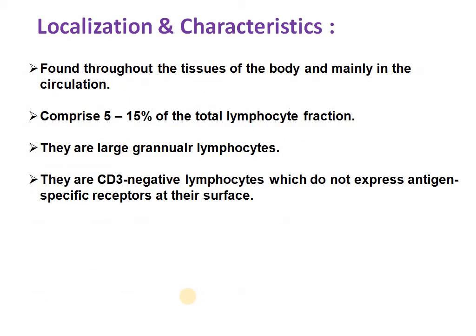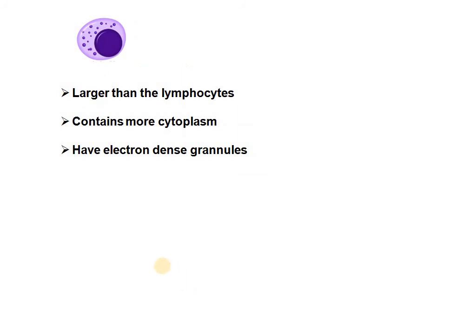NK cells can be found throughout the tissues of the body, mainly in the circulation, comprising about 5 to 15 percent of the total lymphocyte fraction. They are large granular lymphocytes. They can be differentiated from regular lymphocytes because they are larger in size, they contain more cytoplasm, and they have electron-dense granules within the cytoplasm. These are the characteristic features by which NK cells can be differentiated from normal lymphocytes.